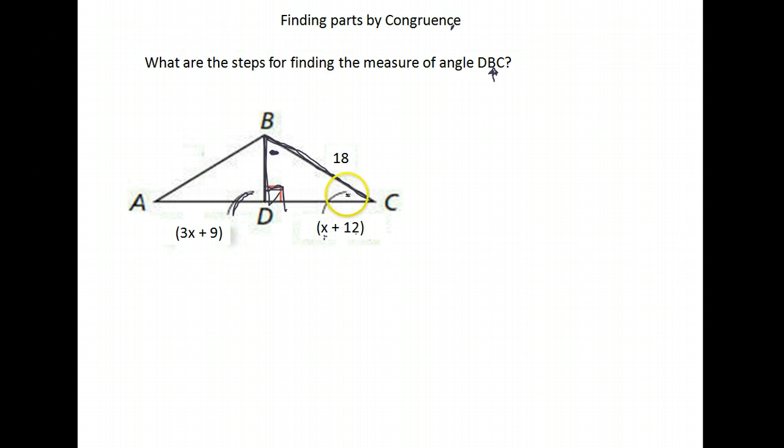So the first thing we're going to have to figure out is what's the value of X. Once we know the value of X, we can substitute it back in here to find the measure of this angle. And once we know the measure of this angle and this angle, we know together these three should add to be 180. So we can solve and find the measure of angle DBC. Alright, so let's go ahead and get started.